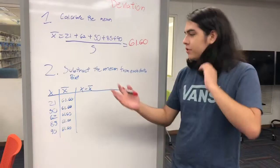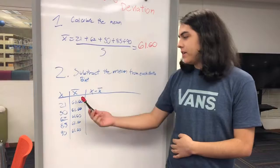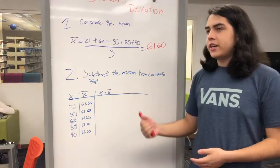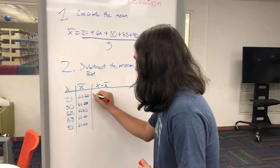My partner will explain the second part. Alright, now we need to calculate the mean from each point. So, we have here the data itself. We have here the mean, which is going to be the same, obviously. And then here we're going to subtract the data and the mean.